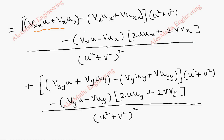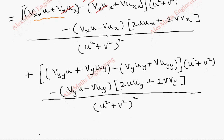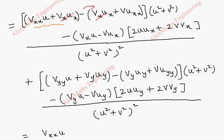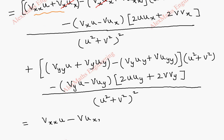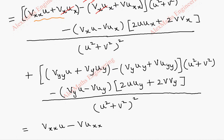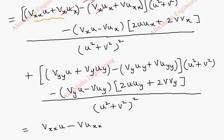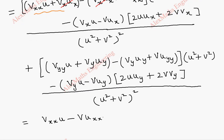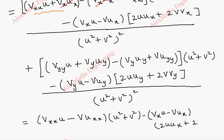Taking the minus sign inside, some terms cancel. The remaining terms from the first expression are: vxx times u minus v times uxx. Along with that, minus the product of (vx u minus v ux) times (2u ux plus 2v vx), all over (u squared plus v squared) whole squared.